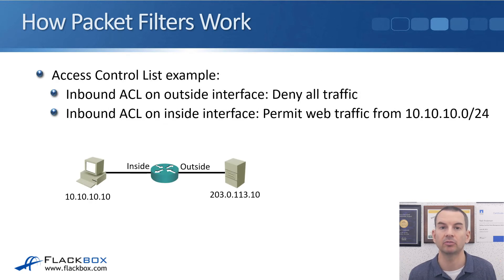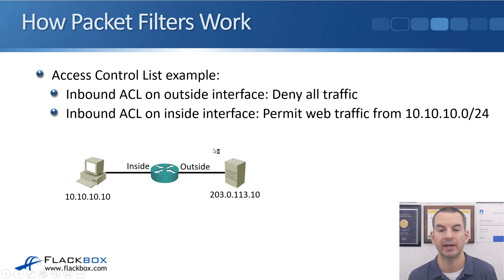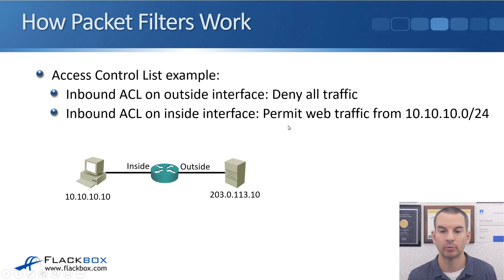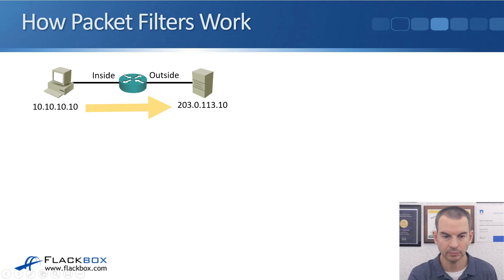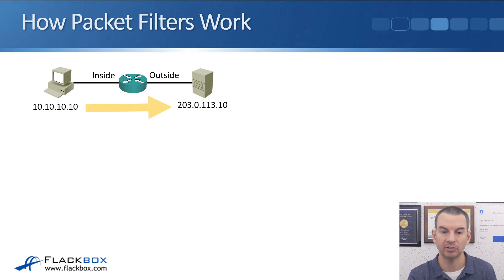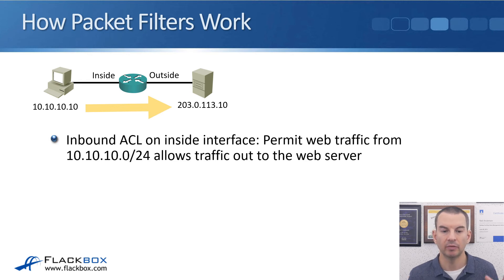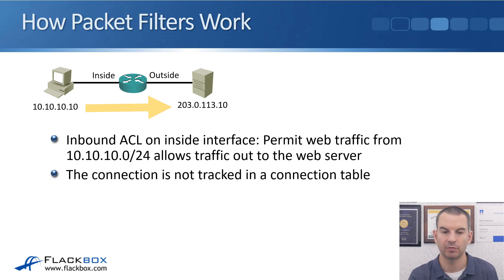Here's a similar example using an access control list. There's an inbound ACL on the outside interface — denying all traffic — and an inbound ACL on the inside interface permitting web traffic from 10.10.10.0/24. When inside host 10.10.10.10 sends outgoing web traffic to 203.0.113.10, the inbound ACL on the inside interface permits it, and the traffic passes through the router to the web server.